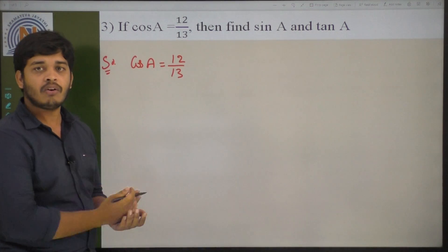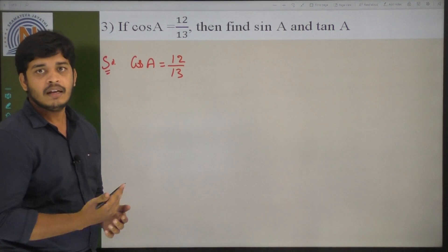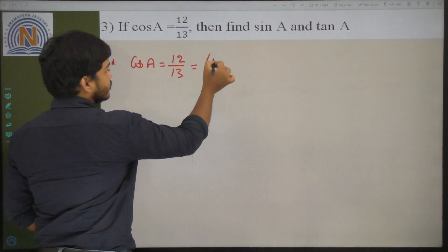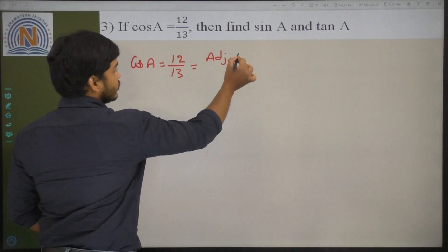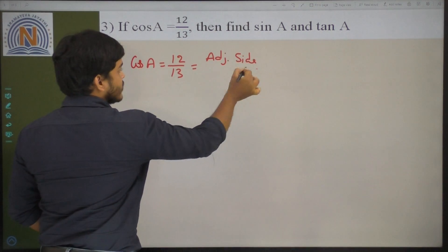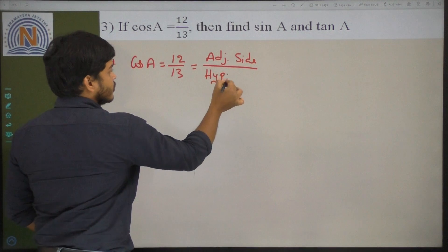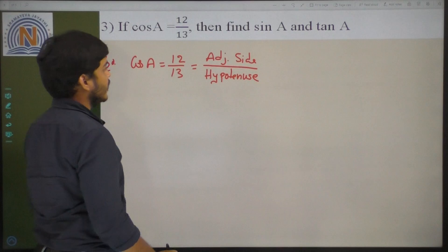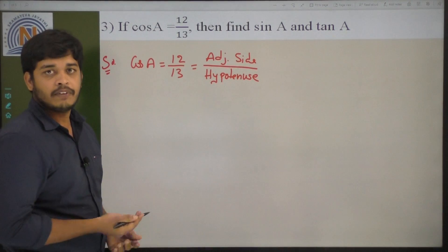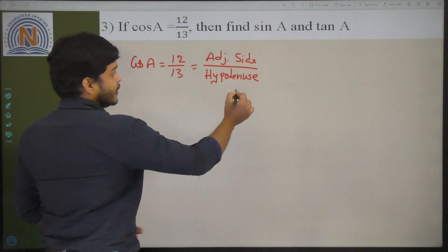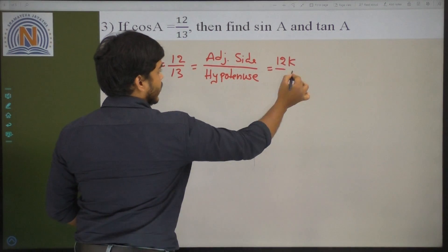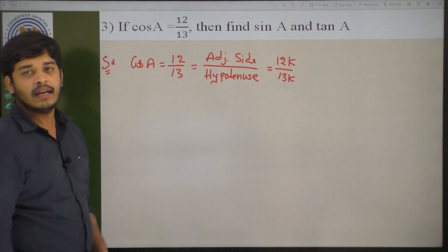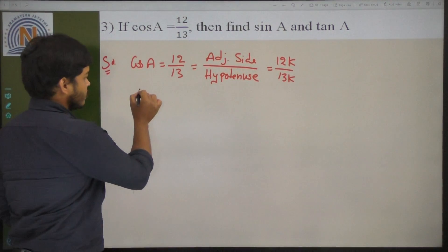Cos A in a right angle triangle with respect to angle A is adjacent side by hypotenuse. So adjacent side by hypotenuse equals 12 by 13. We don't know the exact lengths, so we multiply with a constant K — that is 12K by 13K. Now the adjacent side length is 12K and hypotenuse is 13K. Draw right angle triangle ABC with angle B equal to 90 degrees. AB is 12K and hypotenuse AC is 13K.